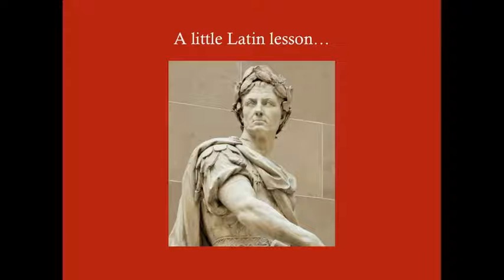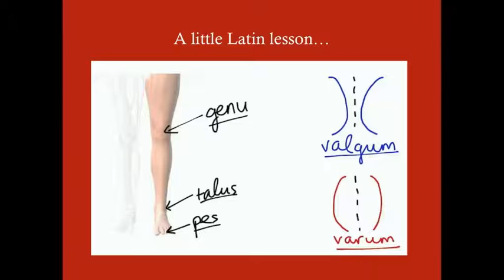A little bit of Latin, because as you probably recognized those names are pretty foreign. It helps to memorize what the Latin words are so that when you see the answer choice on the USMLE you know what it's referring to. The Latin word for knee is genu, talus is the ankle, and pes refers to the foot.